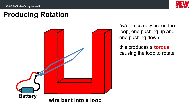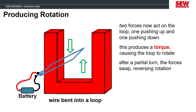The loop will rotate to almost the midway point of a full rotation, but a problem presents itself causing the rotation to stop. The loop's current flow direction with respect to the horseshoe magnet has now flipped, which causes the forces to flip, so the loop returns to where it started.